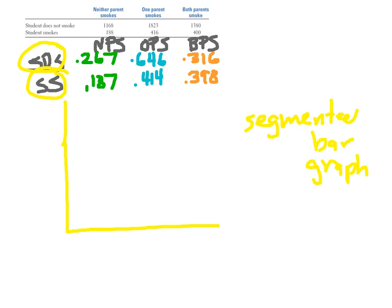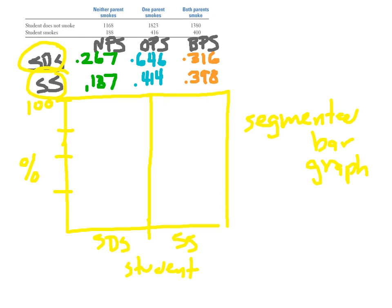I'm going to put 'student status' down here — students who don't smoke and students who do smoke — and on the y-axis I'll go 25, 50, 75, 100 percent. This bar represents all of the students who don't smoke and then all of the students who do smoke. I'm going to take this bar and break it up — for students who don't smoke, it's about 26.7 percent, so I'll go like this.